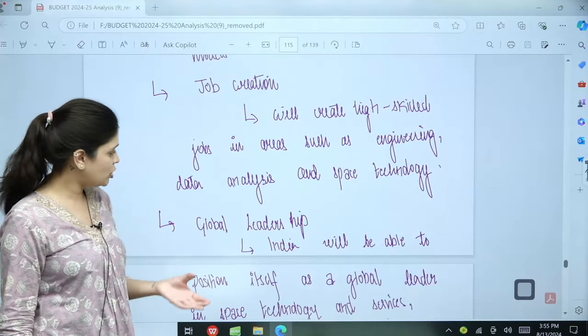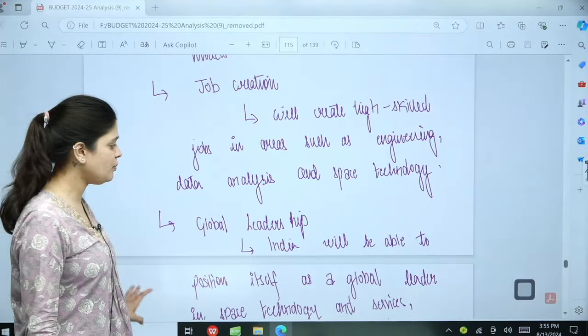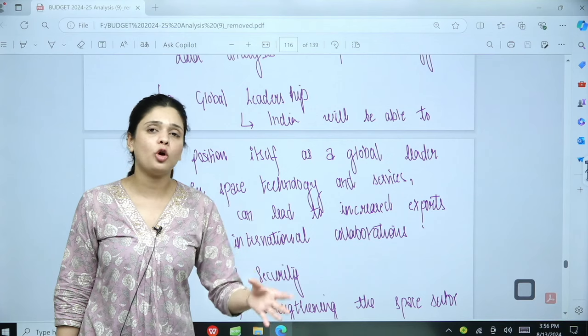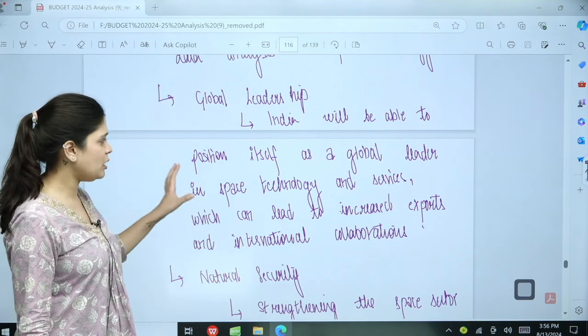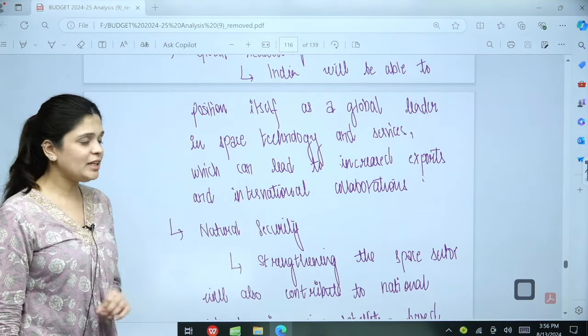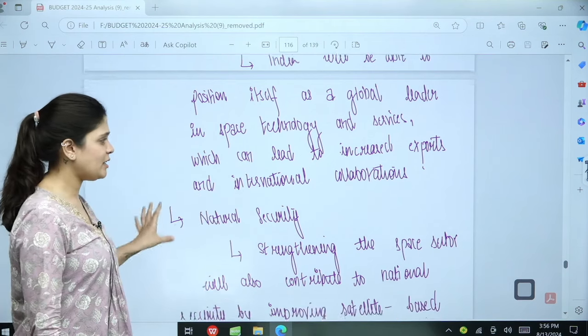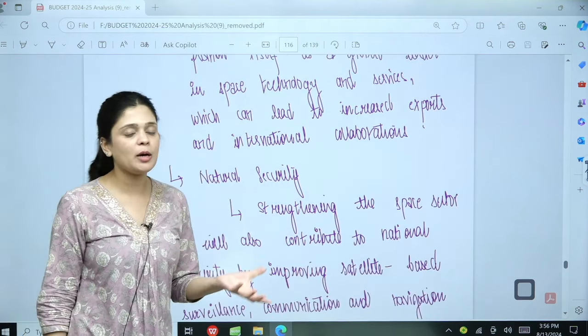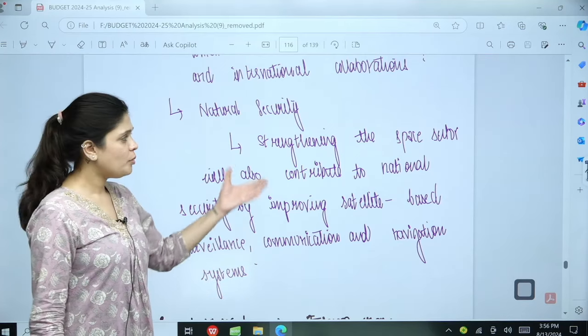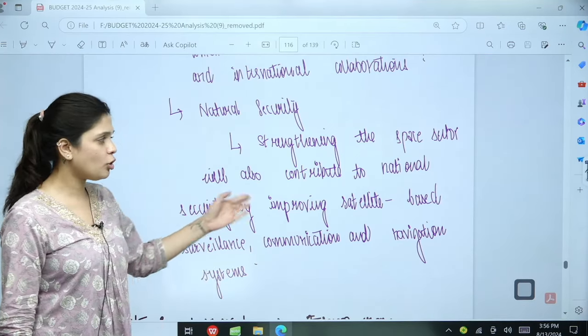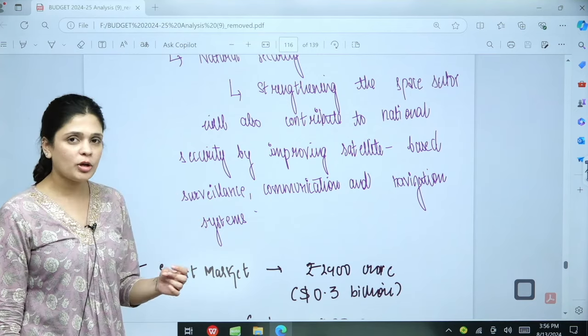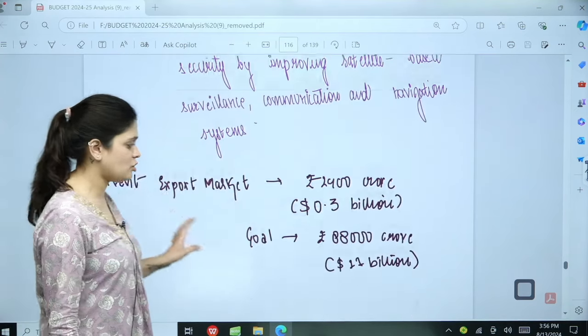For example, engineering, data analysis and space technology. Global leadership. India's share in the global space economy will increase. We will be able to position ourselves as a global leader in space technology and services which can lead to increased exports from our country and international collaboration as well, as happens in the US via SpaceX. National security, because when we strengthen our space sector, it will also contribute to national security by improving our satellite based surveillance, communication and navigation system.